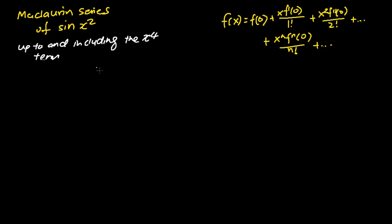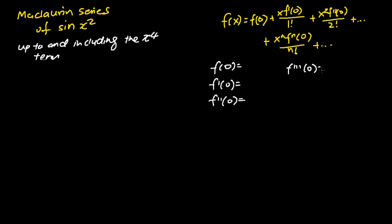The top right hand corner formula tells us that the function of x can be expressed as an infinite series in which we need to evaluate the following. f(0) is the function evaluated at x equals 0. f'(0) is the function differentiated once and evaluated at x equals 0. f''(0) is the function differentiated twice, f'''(0) differentiated three times, and f''''(0) is the function differentiated four times, all evaluated at x equals 0.